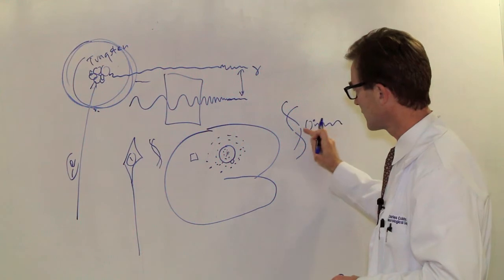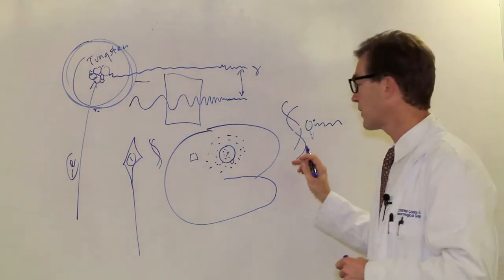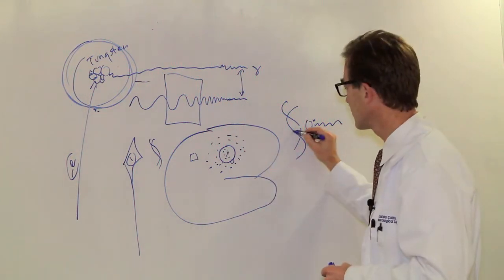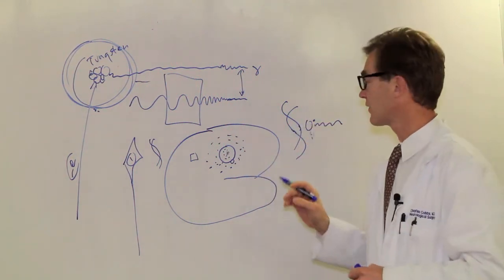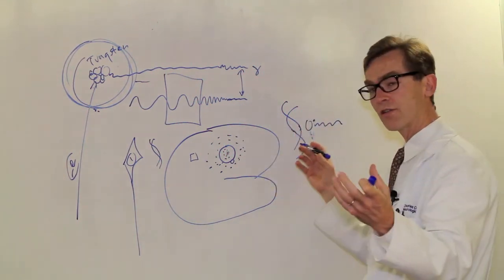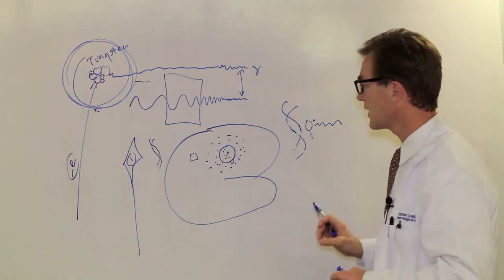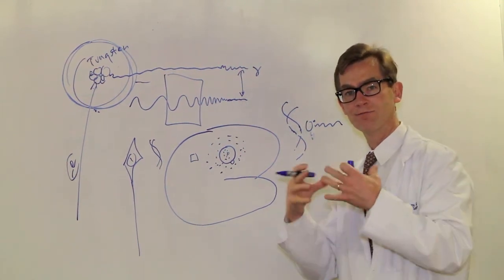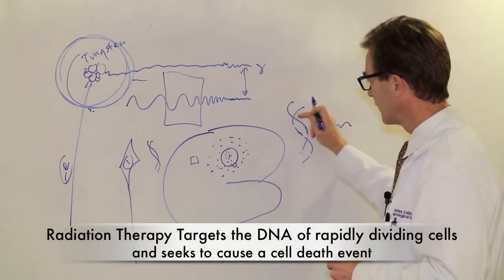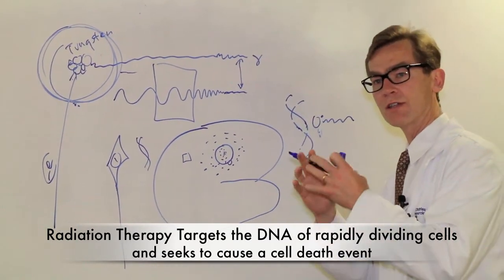When oxygen is present and hits DNA and causes double-stranded breaks, most of that will be repaired within an hour or two by the cellular machinery so that you can get those DNA breaks fixed. However, if that cell is dividing rapidly and these DNA strands are pulled apart and the cell's trying to copy those strands and there are breaks and chopped up pieces of DNA everywhere, that cell may actually die. So the way radiation works is you're trying to target the DNA of rapidly dividing cells so that it'll be much more sensitive to causing a cell death event.